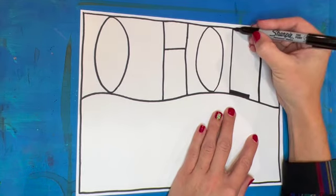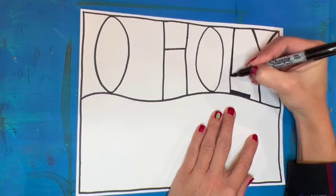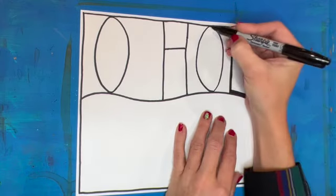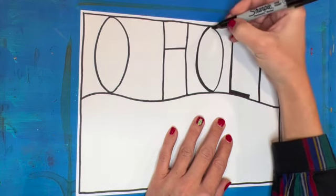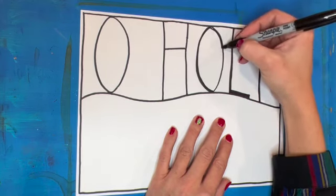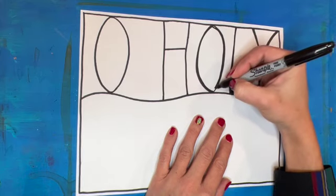I want to make sure my letters are nice and wide, so I'm actually going back and tracing over some of them just to thicken them up a little bit. That really makes it so the letters will stand out at the end and they won't just get lost in the coloring.